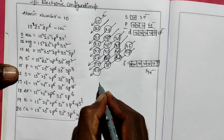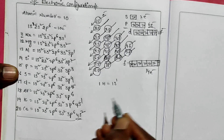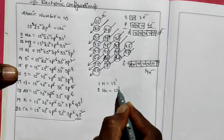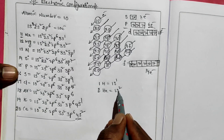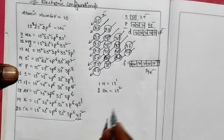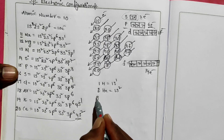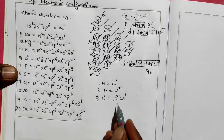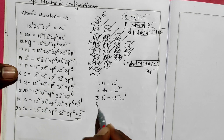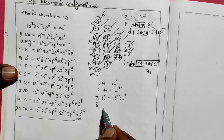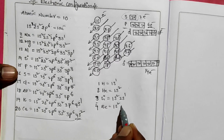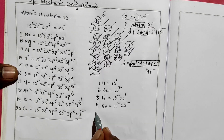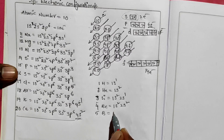Now from atomic number 1: hydrogen has electronic configuration 1s1. Atomic number 2, helium: 1s2 — 2 electrons fill the s orbital. Atomic number 3, lithium: 1s2, 2s1 — 2 + 1 = 3 electrons. Atomic number 4, beryllium: 1s2, 2s2.